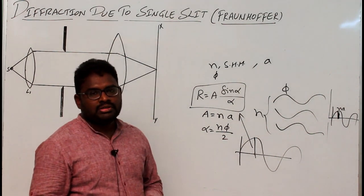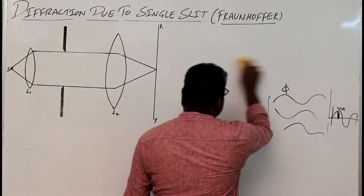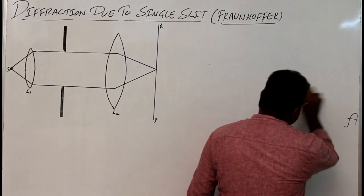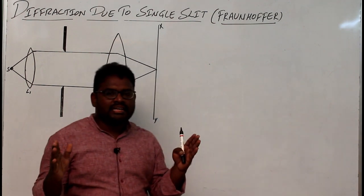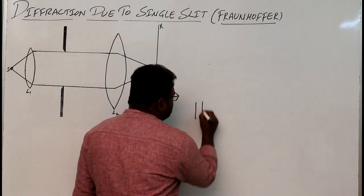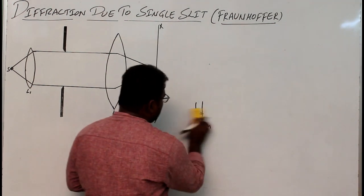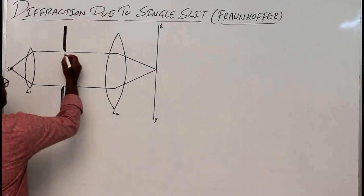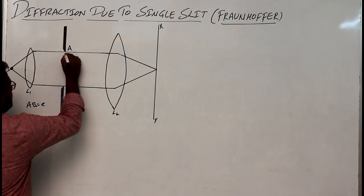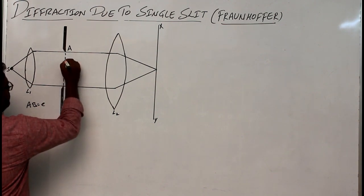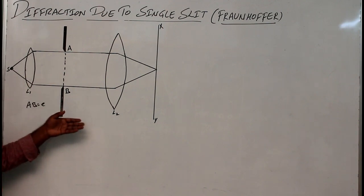Now let us consider a single slit of size e (small e). Assume there are two lenses and a screen. The slit is not a large gap — it should be a narrow one, the gap between two obstacles should be very narrow, on the order of millimeters or nanometers — very thin. Consider a single slit AB of size small e, meaning the gap between the two edges A and B is small e.